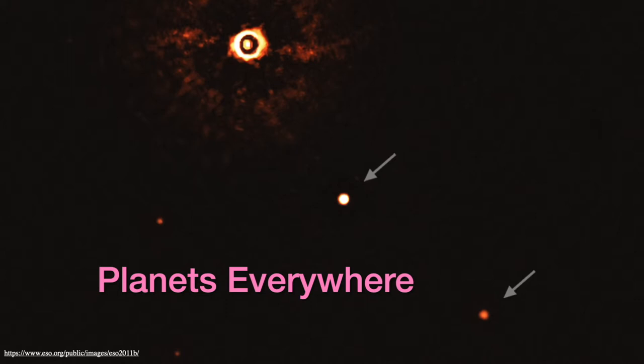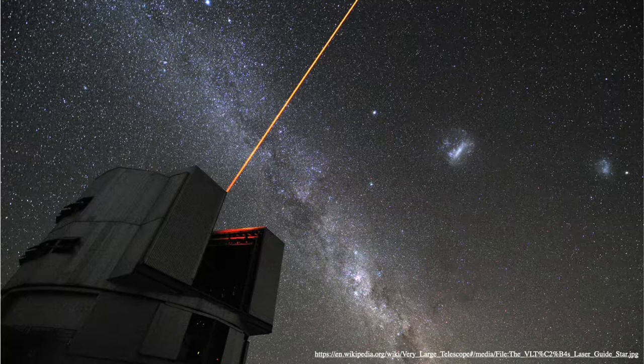Now, you might have some questions about this image, like why does the parent star look so funny? The reason for that is the light from the star has to be blocked so it doesn't overwhelm the telescope. You also see some other stars in the image, but these are just background stars. They're not part of the solar system being imaged.